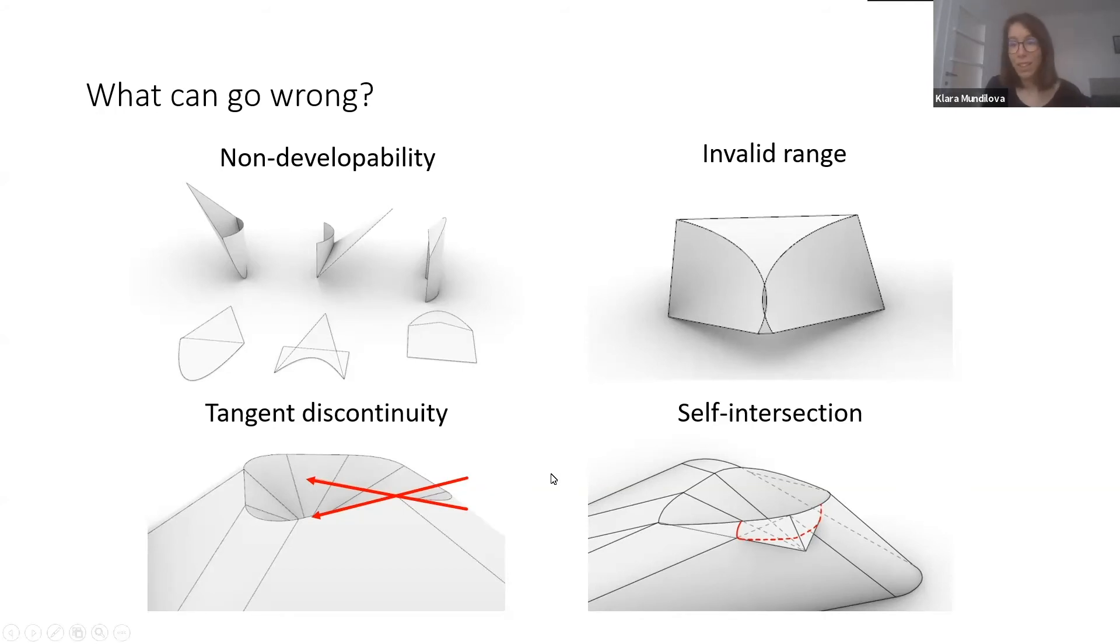Another thing that is often desired is to have tangent continuous crease curves. We will also express this as a constraint. What we also don't want is to have self intersections. Those would be unfortunate for fabrication.